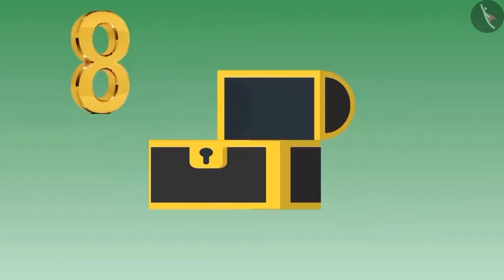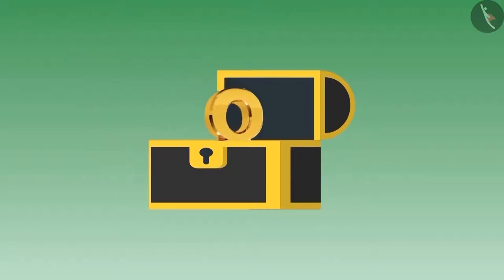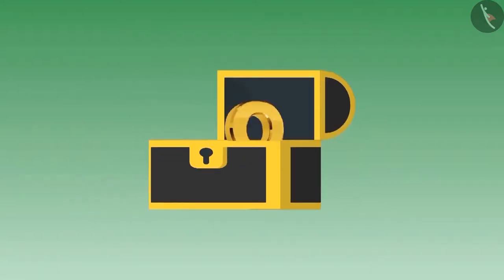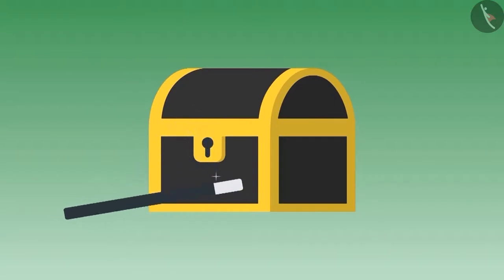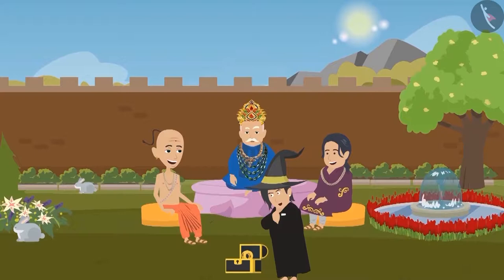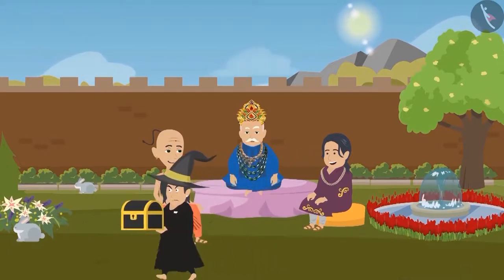Next, Tenali Raman placed the number eight, made of iron, upright in the box. The magician recited the magical words and performed the magic. But when he opened the box, the object was upright once again. The magician tried again but could not succeed. Finally, he gave up, apologized to the king, and left.